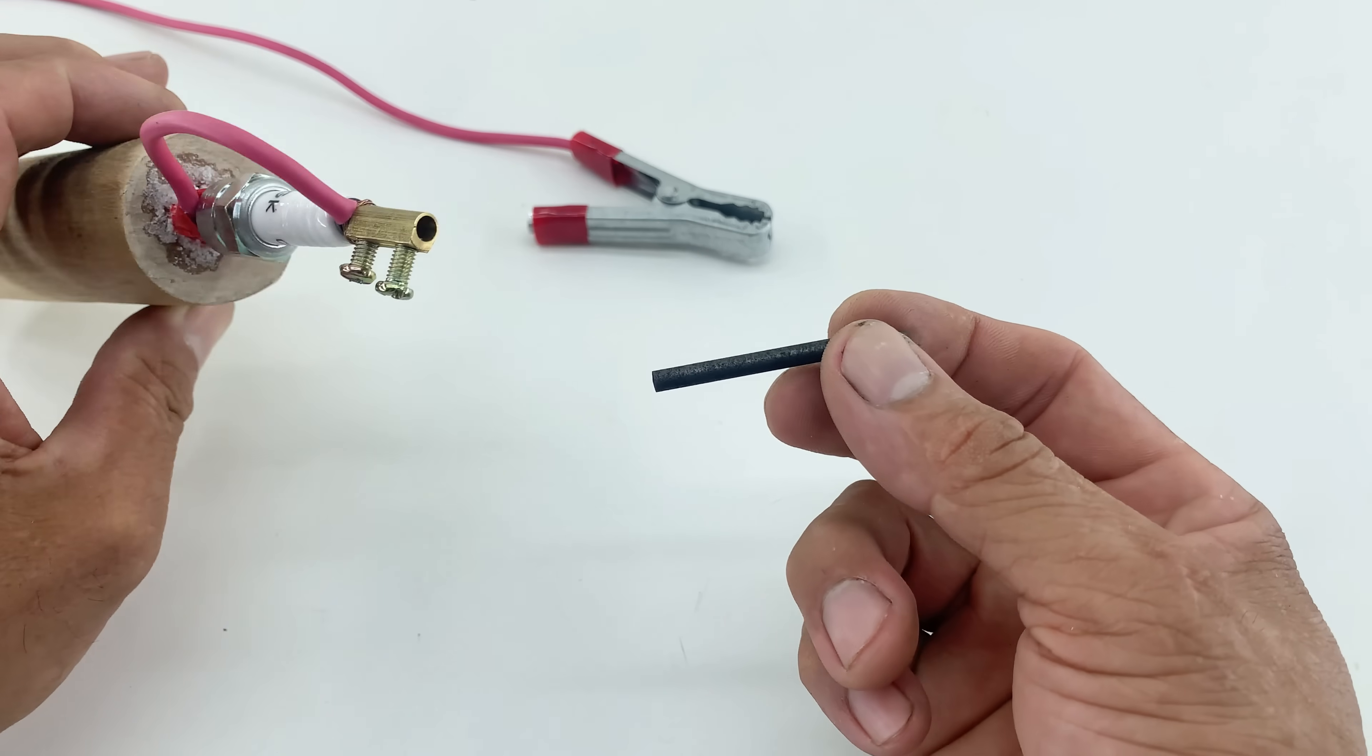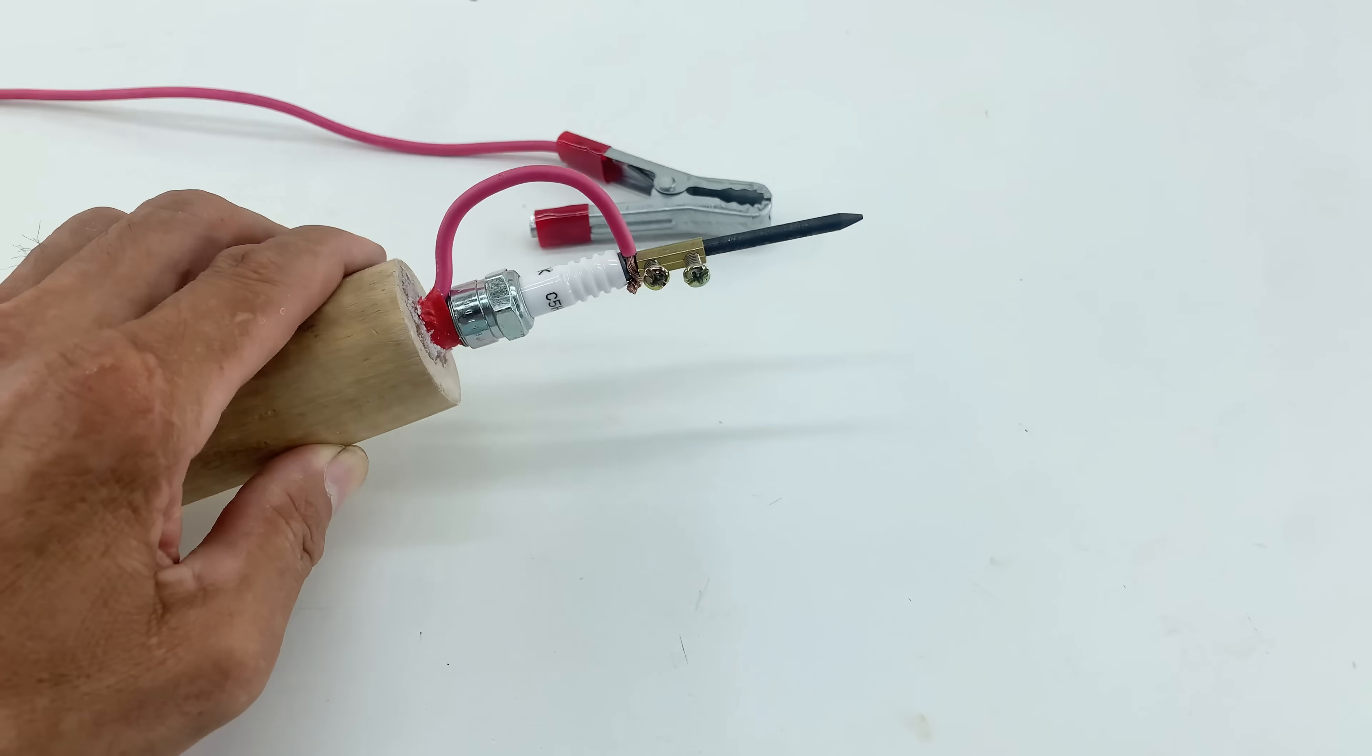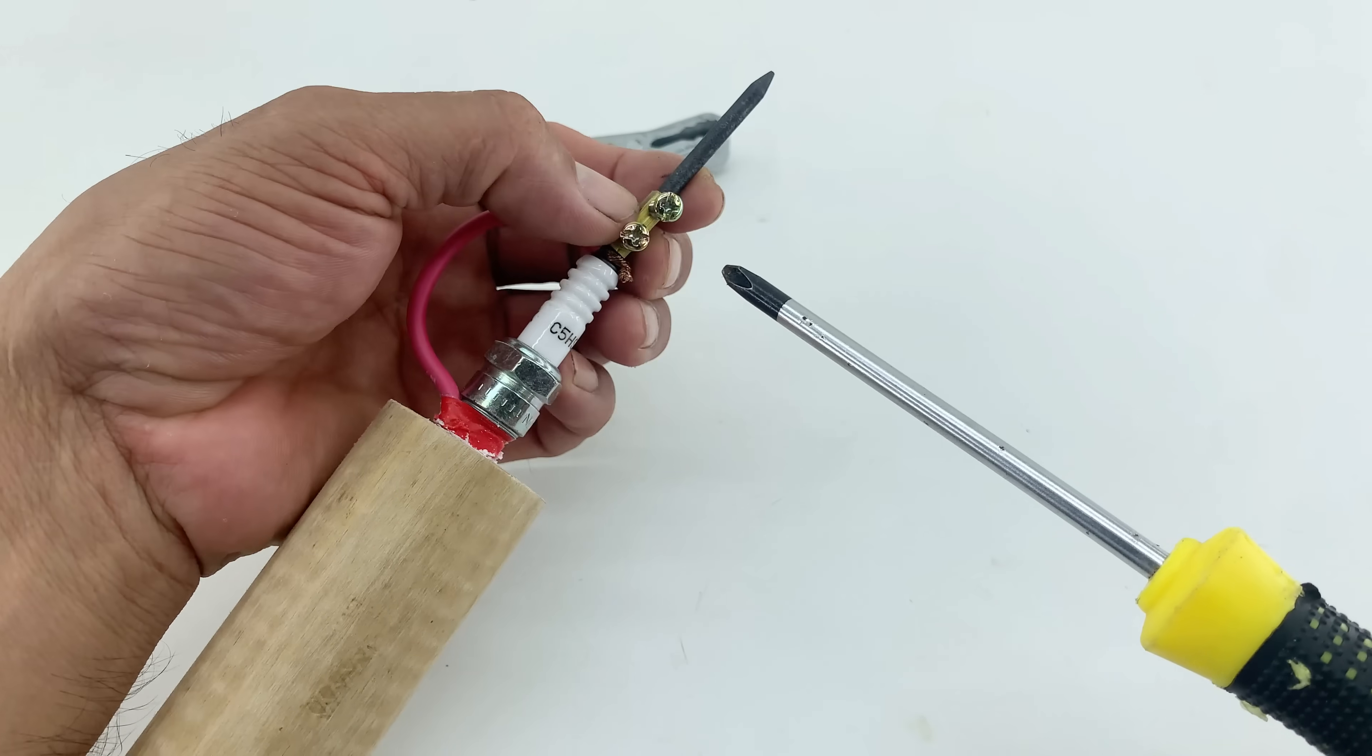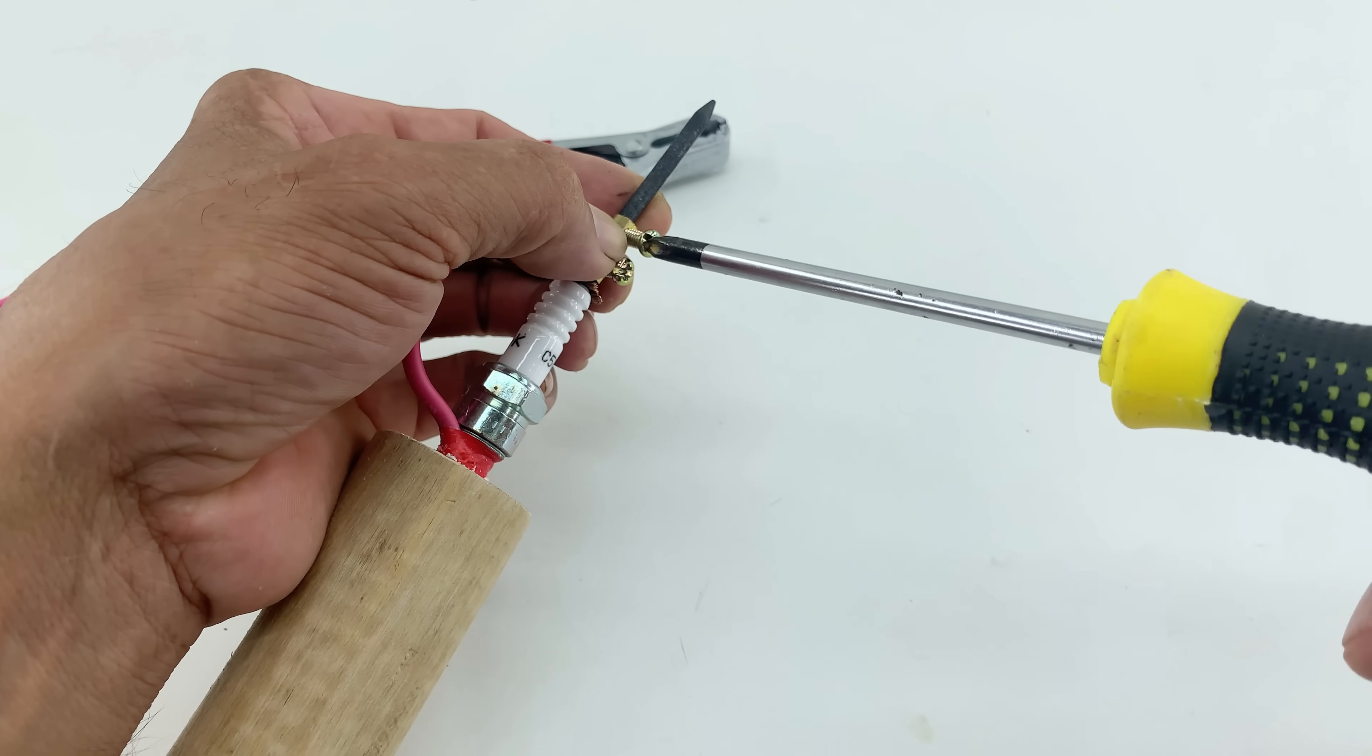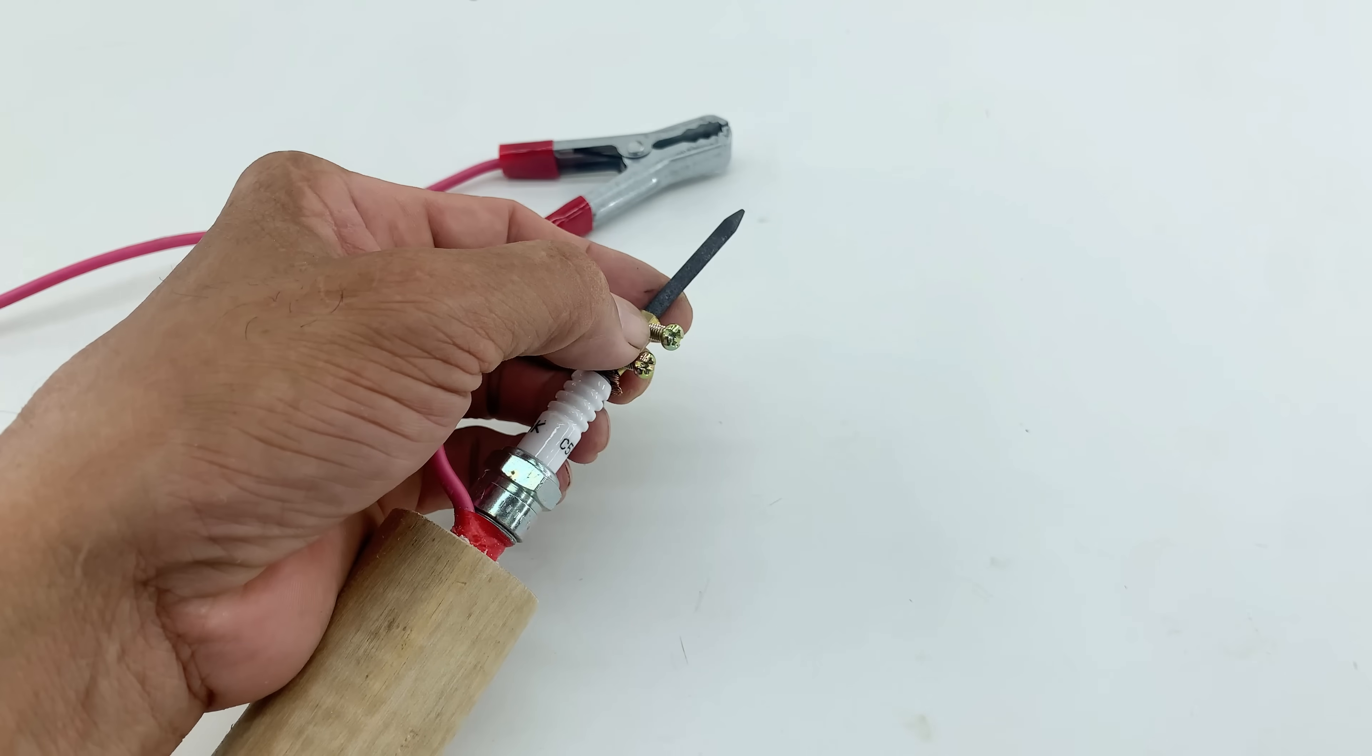After that, I insert the sharpened carbon rod into the brass connector on our spark plug tool. I use a screwdriver to tighten the connector, ensuring the carbon rod is held firmly in place and makes good electrical contact.